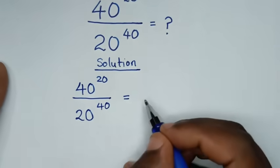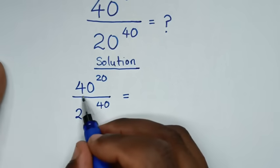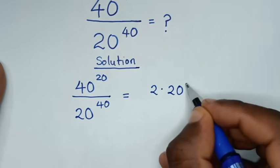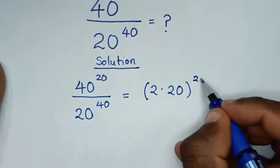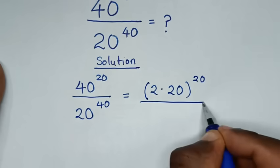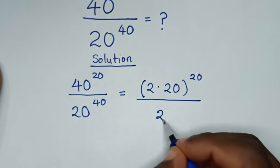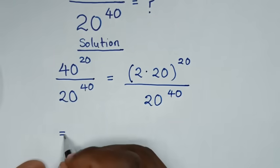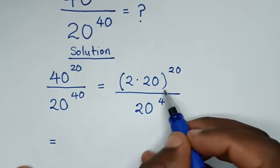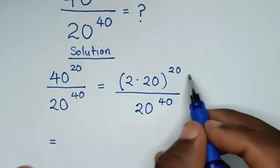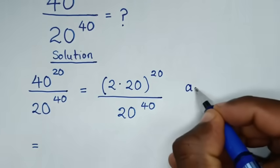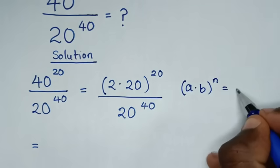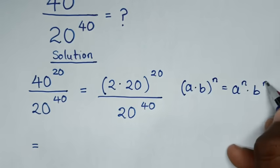It will be equal to: 40 is the same as 2 times 20, then bracket this power of 20, over this exponent of 20 power of 40. In the next step, it will be equal to: from 2 times 20 bracket power of 20, this part here is in the form of (a times b) bracket power of n, which is equal to a power of n times b power of n.